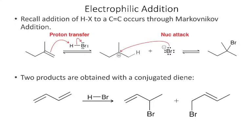We can also do electrophilic addition with conjugated dienes, but we're going to get multiple potential products. In this case, if we add HBr to 1,3-butadiene, we get two major products. Let's see why we get these two different products.